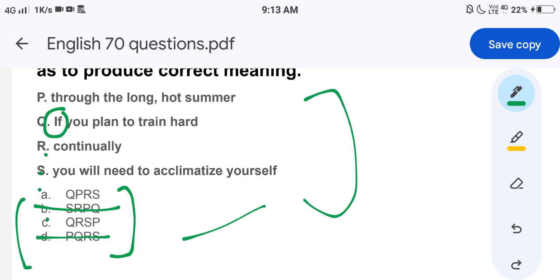Now we have to use A and C. First, let's look at A. What is QPRS? If you plan to train hard through the long hot summer, you will need to acclimatize yourself continually. First of all, I think some of you might not know what is the meaning of acclimatize yourself. Let me tell you. Acclimatize means to adapt or to adjust as per the surroundings. So as per this option, acclimatize yourself continually - this is a wrong sentence. Rather, it would be continually first. So eliminate this as well.